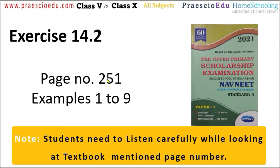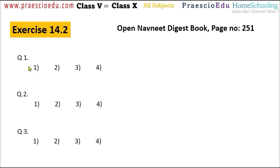Exercise 14.2 is available on page number 251 and there are a total of 9 examples. Question number 1: the number 8 has 4 factors, the number 12 has 6 factors, and 8 multiplied by 12 is 96.